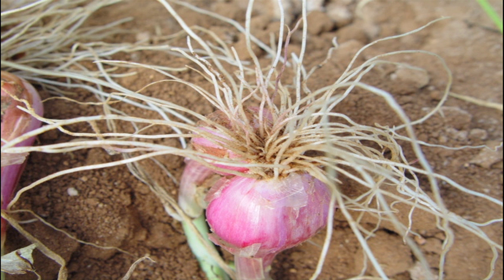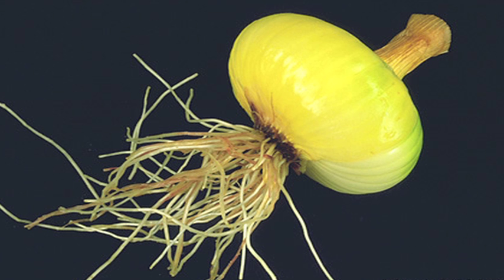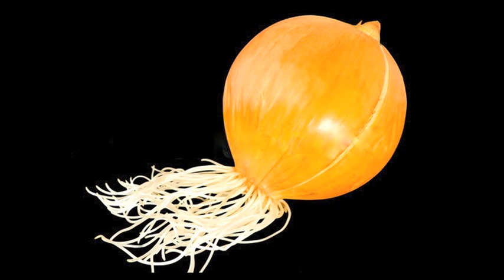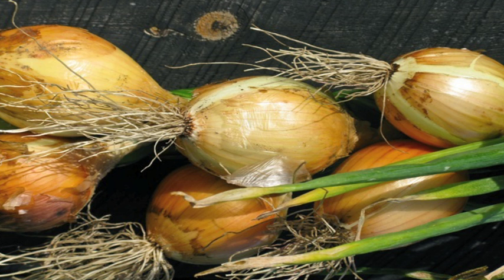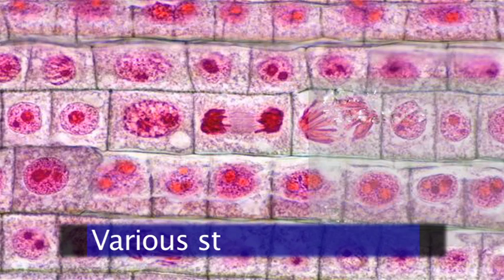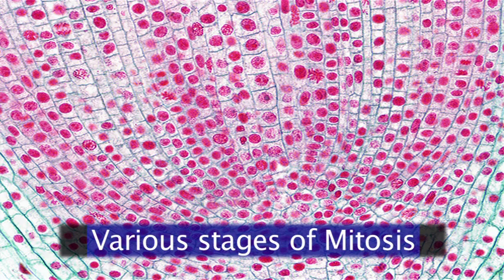Onion roots are excellent examples and are commonly used for viewing mitosis in the lab. Onion roots are very easy to grow in large numbers. Cells of the tip of the root actively divide, thus there will be many cells in the mitotic phase.